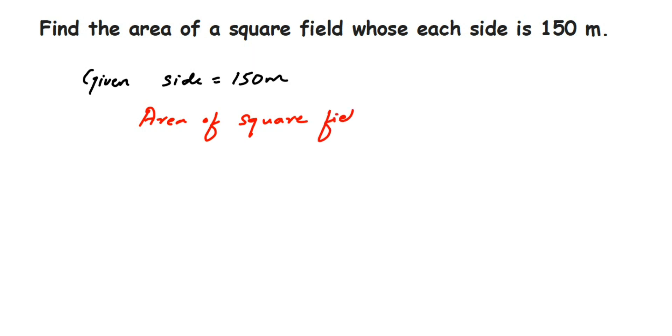Area of square field is equal to—the area of a square is side times side—so it will be s times s, or side times side, or you can also write side squared. All are the same.